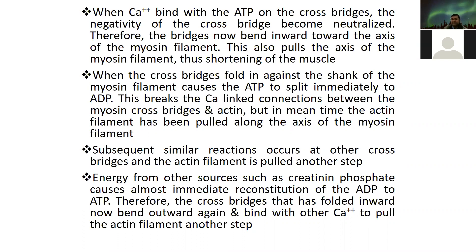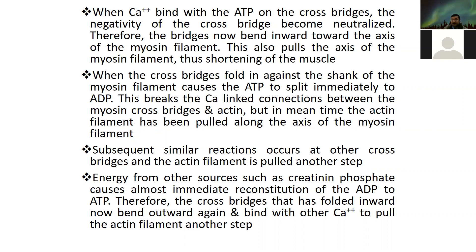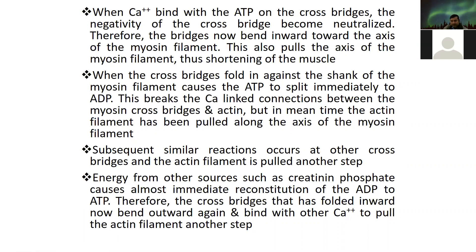Because subsequent reactions are not happening, the effect ceases. Where movement of muscles is required, it will continue. Energy from other sources such as creatine phosphate causes almost immediate reconstitution of ADP to ATP. This is why the cross-bridge is folded inward — when ADP is present, it goes inside and then moves the actin filament to the other stage.